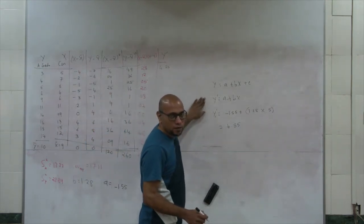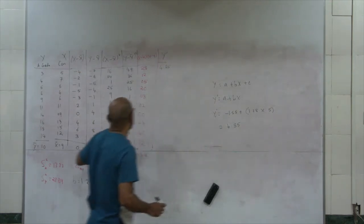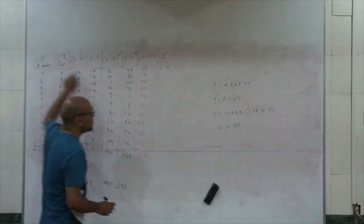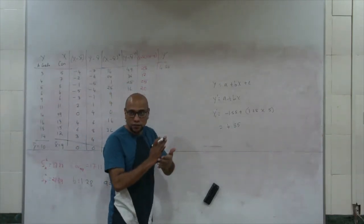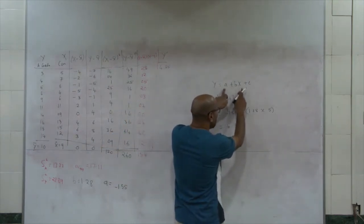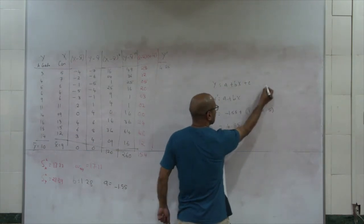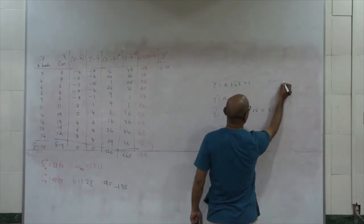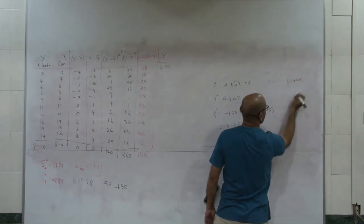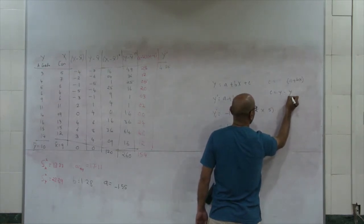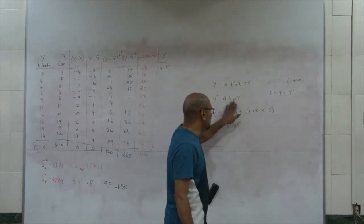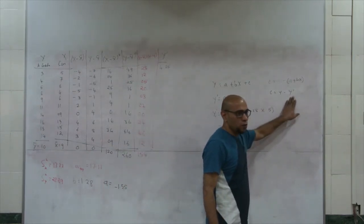My model is a plus bx. The actual value of y is 3, and the predicted value of y is 4.85. There is a difference between the two values. So e is equal to y minus (a plus bx), that is e equals y minus y-prime, where y-prime is the predicted value of y.